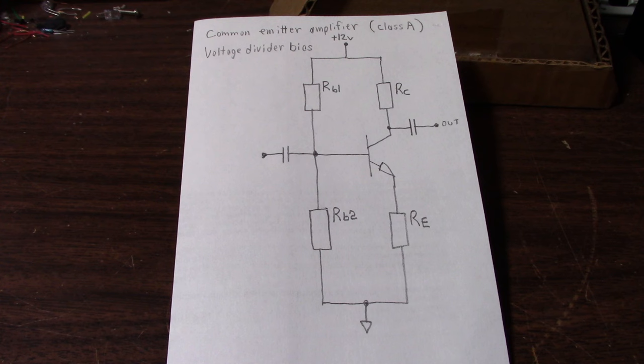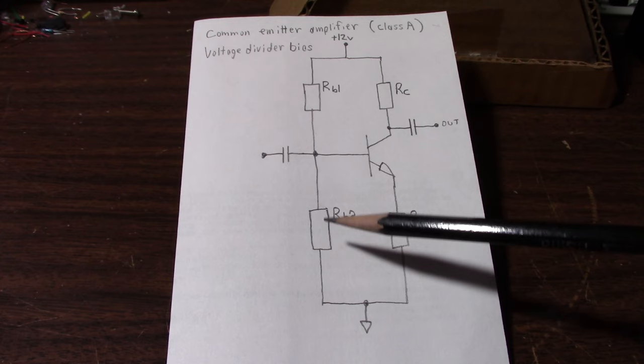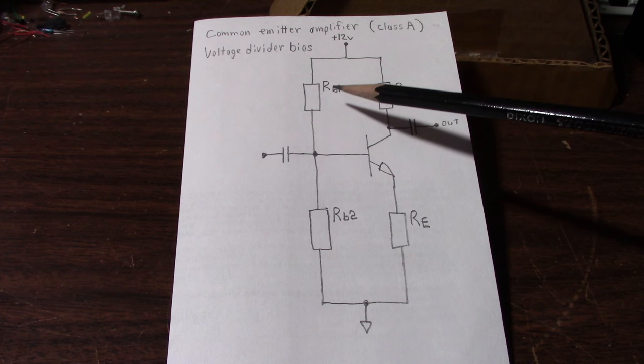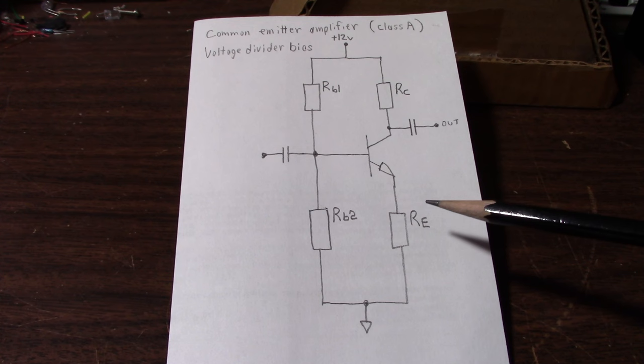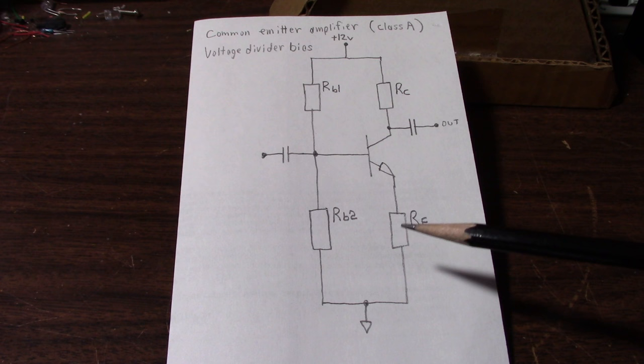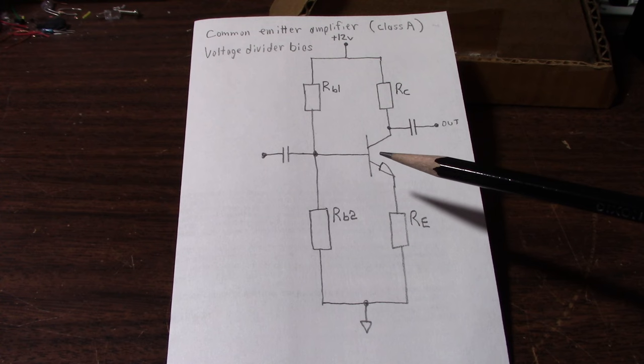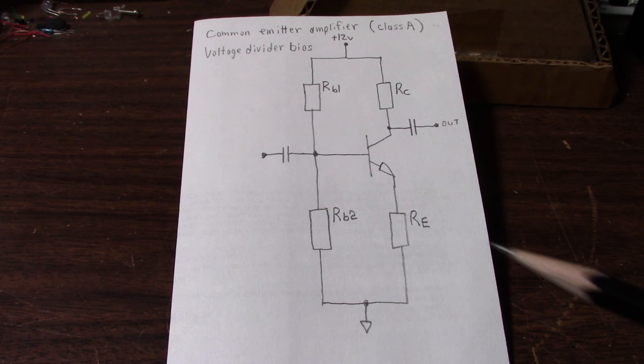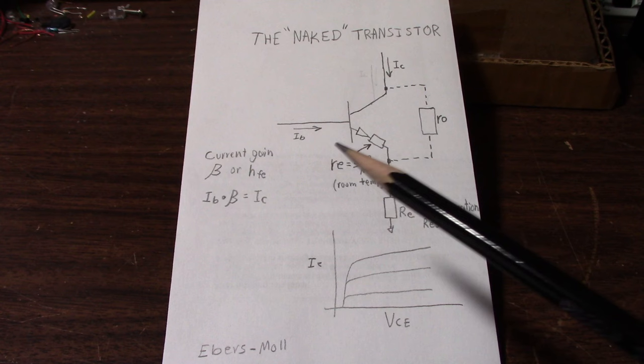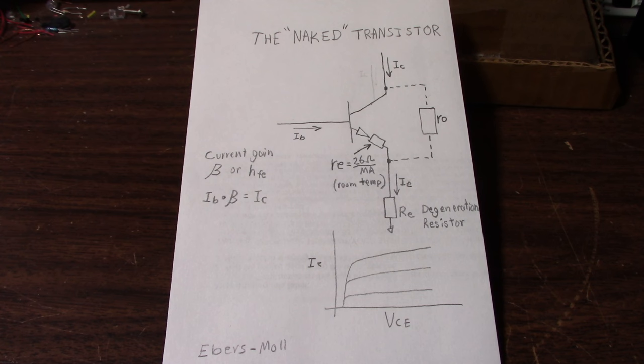So we have the amplifier circuit here. We have the voltage divider which is made up of this resistor and this one here, RB1 and RB2. RE is known as an emitter degeneration resistor because it mitigates some of the nonlinearities of the transistor. And also it works with our bias circuit. Before I actually start designing the circuit, let's take a look at some of those nonlinearities.